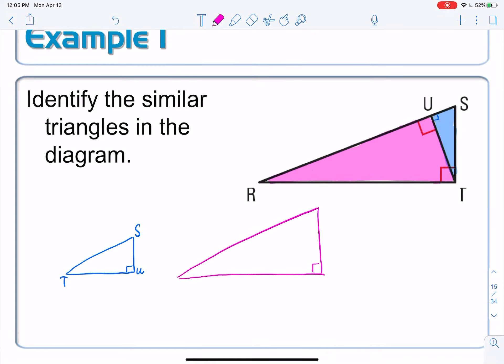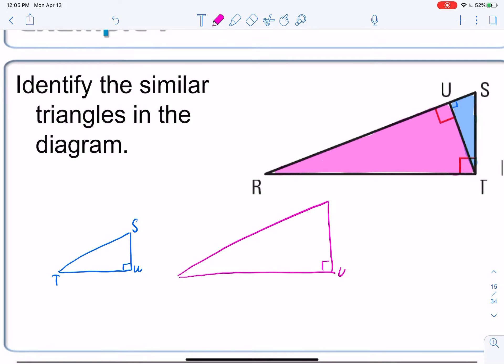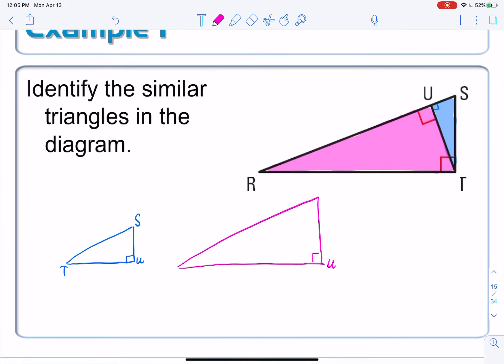So the right angle for the magenta one is also at U. And then the shorter leg, the shorter leg here is U, T, this shorter leg here.